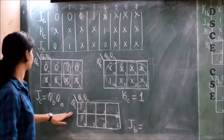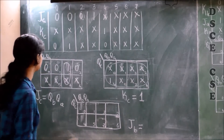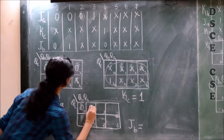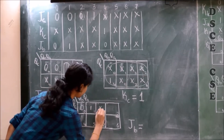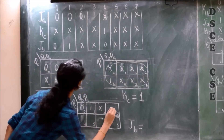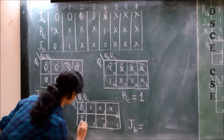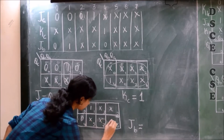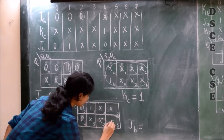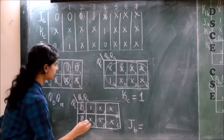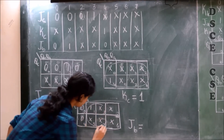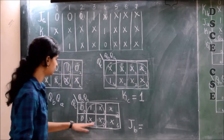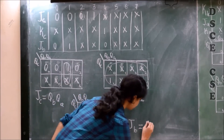Drawing the K-map for JB, the values are 0, 1, don't care, don't care, 0, and remaining don't cares. Thus we get a quad form. So the value of JB becomes QA.